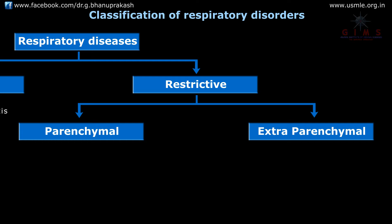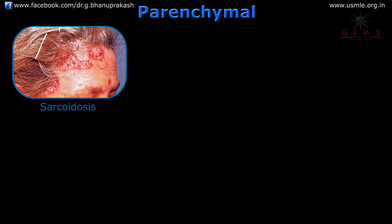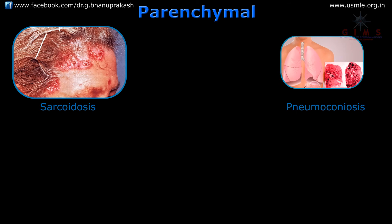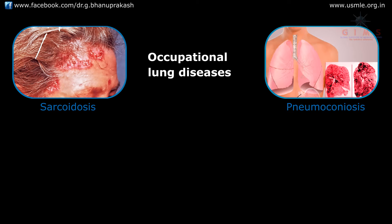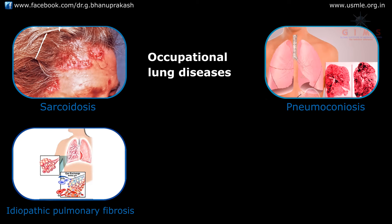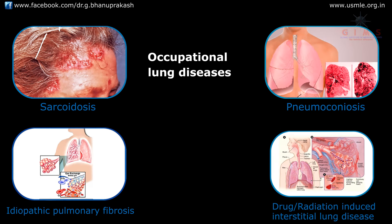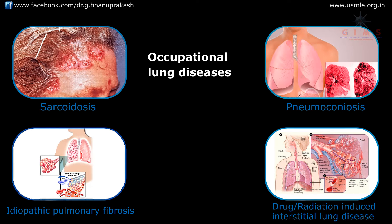The parenchymal diseases include sarcoidosis, pneumoconiosis — which are occupational lung diseases — idiopathic pulmonary fibrosis, and diseases caused by drugs or radiation. This category also includes interstitial lung disease.